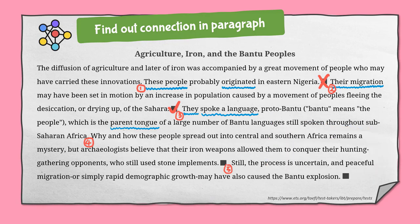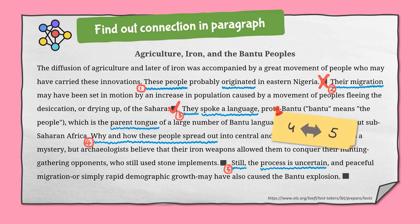The fourth sentence is about why and how these people spread out into Africa. After the third square, there's a transition word 'still' — 'process is still uncertain.' These two sentences have a close relationship, so the third square is not correct.